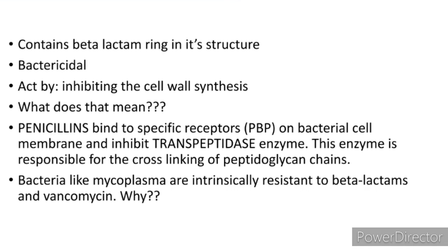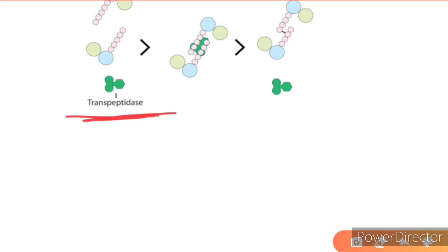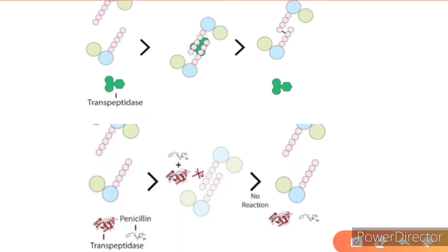Bacteria like mycoplasma are intrinsically resistant to beta-lactam and vancomycin because they don't have a cell wall. Here in the image you can see the transpeptidase enzyme, which is essential for the binding of two glycopeptide chains. In the presence of penicillin, this reaction cannot occur.